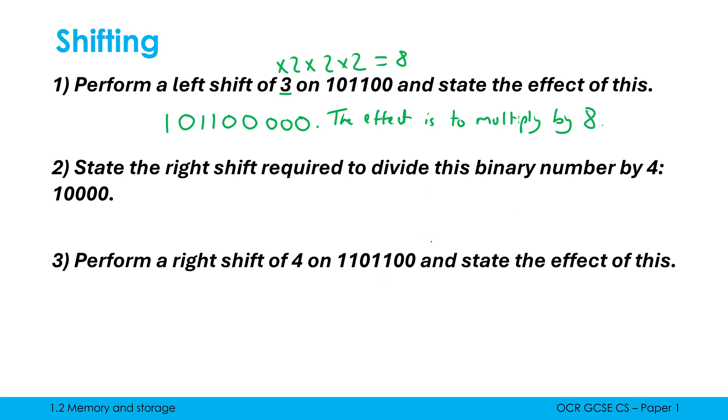People often write multiplying by 6 because they assume it's 3 times 2, but it's not. It's powers of 2. The general rule is either multiplying or dividing by 2 to the power of how many times you're shifting. Question 2: state the right shift required to divide by 4. I want 2 to the power of something equals 4. The answer is 2, so a right shift of 2.